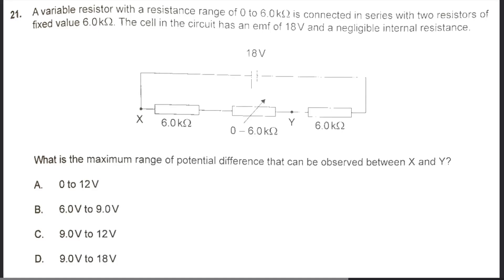IB Physics, May 2024, Time Zone 1, SL paper 1, question 21. A variable resistor with a resistance range of 0 to 6 kiloohms is connected in series with two resistors of fixed value 6 kiloohms. The cell in the circuit has an EMF of 18 volts and a negligible internal resistance. What is the maximum range of potential difference that can be observed between X and Y?